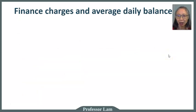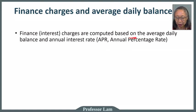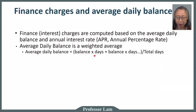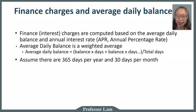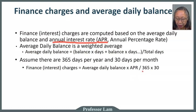Understanding how finance charges are calculated is a very important part of personal finance. Finance charges, or interest charges, are computed based on something called the average daily balance and the annual percentage rate, which is the APR. The average daily balance is basically a weighted average — we take your balance times the number of days for that balance, add it up, and divide by the total number of days. If you assume 365 days per year and 30 days per month, the finance charge is computed as the average daily balance times the APR divided by 365, times 30 — that's the billing period.